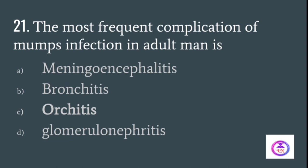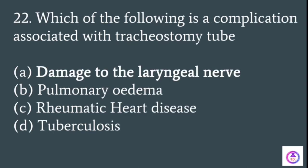The most frequent complication of mumps infection in adults is mumps orchitis. A complication associated with the tracheostomy tube is damage to the laryngeal nerve.